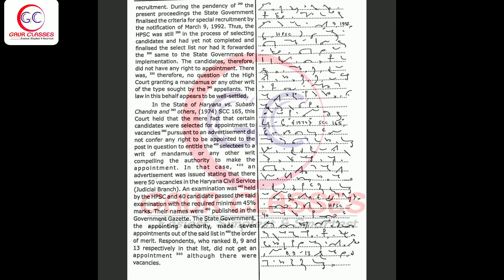The State Government, the appointing authority, made seven appointments out of the said list in the Order of Merit. Respondents who ranked 8, 9 and 13 respectively in that list did not get an appointment although there were vacancies.